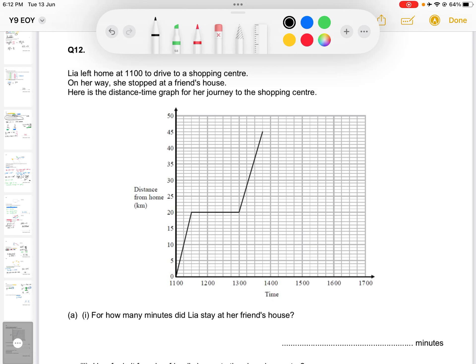Question 12. Leah left home at 11am and drove to a shopping center. On her way she stopped at a friend's house, and as far as the graph is concerned, this is the period where she was stopping at her friend's house. And this in general, the whole thing, is a distance-time graph.